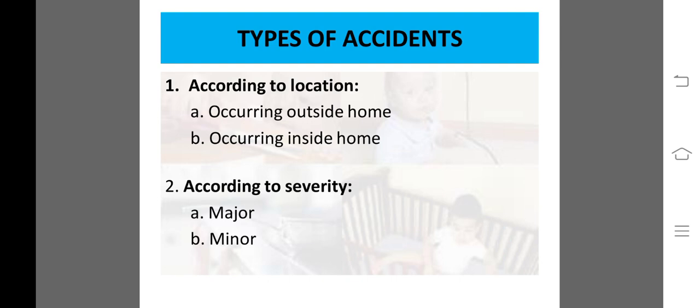اگر بچہ باہر playground میں کھیل رہا ہو اور کسی equipment پر گرے یا جھولے سے گرے تو بھی بچے کو injury ہو سکتی ہے۔ یہ سب outdoor activities کی وجہ سے ہونے والے accidents ہیں۔ اب اگر گھر کے اندر کی بات کریں — گھر سب سے safest place مانا جاتا ہے، لیکن گھر میں بھی بچے کو accident ہو سکتا ہے، جیسے bed سے گرنا۔